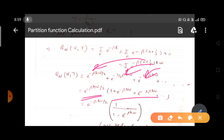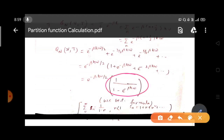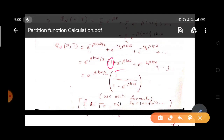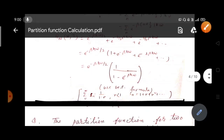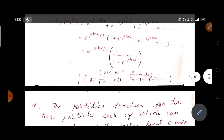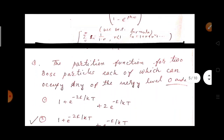Taking out the common factor e^(-beta*h_bar*omega/2), you are left with 1 + e^(-beta*h_bar*omega) + e^(-2*beta*h_bar*omega) + further terms. Applying the formula for an infinite GP series, which is 1/(1 - r) where r = e^(-beta*h_bar*omega) and the first term is 1, you get 1/(1 - e^(-beta*h_bar*omega)). So the full partition function is e^(-beta*h_bar*omega/2) / (1 - e^(-beta*h_bar*omega)).